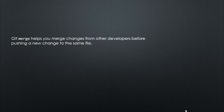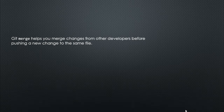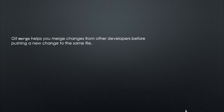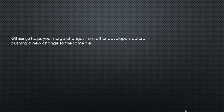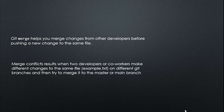So what is git merge? Git merge simply helps you to merge changes from other developers before pushing a new change to the same file. For instance, when your co-worker makes a change on his branch on the same project, before you push your master branch you might want to merge their work into the master branch to push to GitHub. So git merge simply allows you to do that.